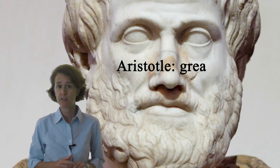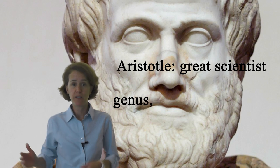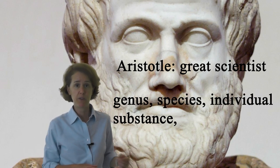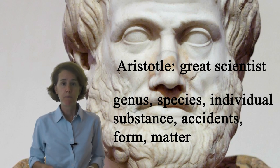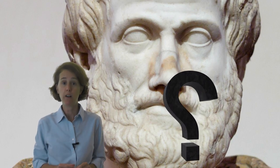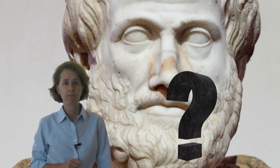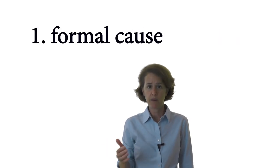Aristotle was the greatest scientist of antiquity, so classification of things into genus, species, and individual — substance and accidents, form and matter — was only a starting point to knowledge. Human beings really want to know why things are as they are. Aristotle identified four causes necessary to understand the why. First, the formal cause: just what is it that makes something what it is and not something else?